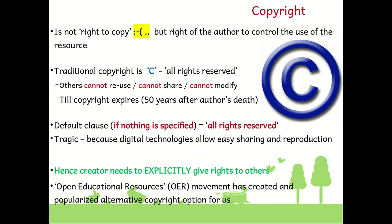The traditional copyright clause, which we see in books that we buy, has the C within a circle. As you can see on the slide in front of you, the slide shows a C with a circle around it in blue color. You will be seeing this copyright clause on the inside cover of books, along with the phrase 'all rights reserved,' which means all the rights — to make copies, to modify, and to share — belong to the author.